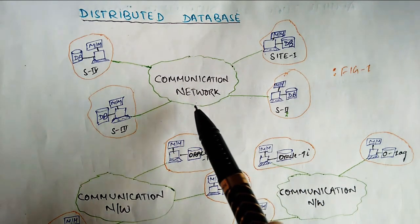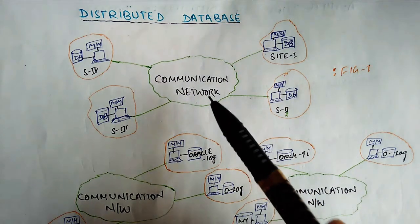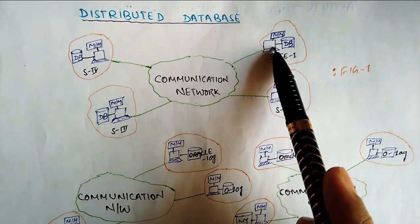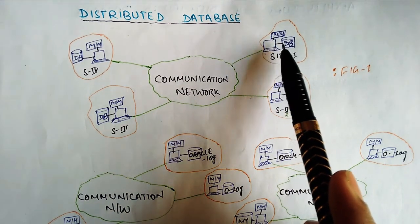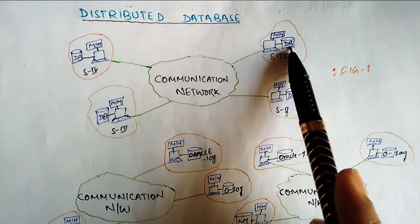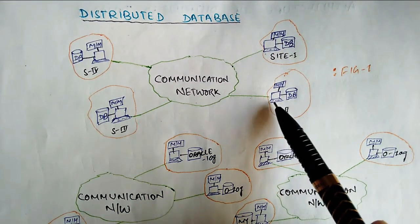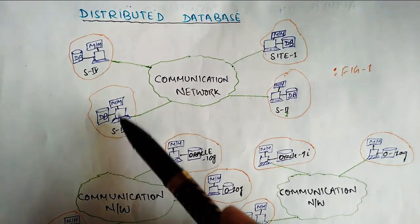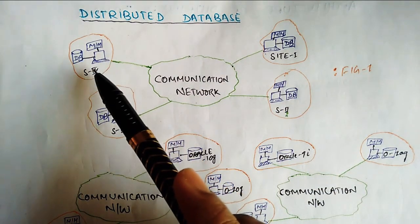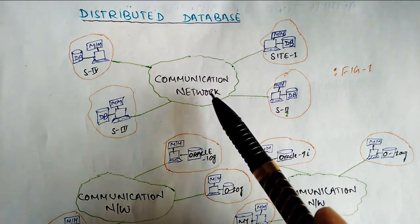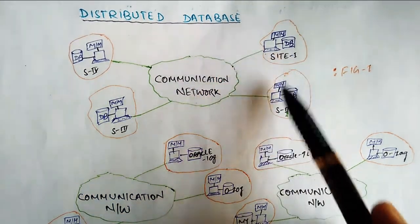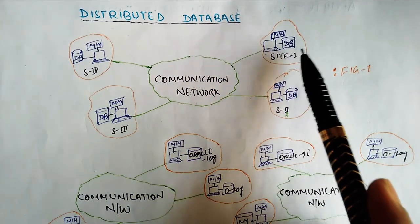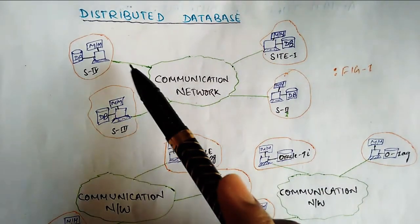Distributed database is very important. We have different sites. Here we have a computer, memory, and database. Similarly, site 2 has a computer system, processor, memory, and database. So everyone has their own memory and database. The communication network distributes the problem to each site, and the same problems are going to be solved by site 1, site 2, site 3, and site 4.